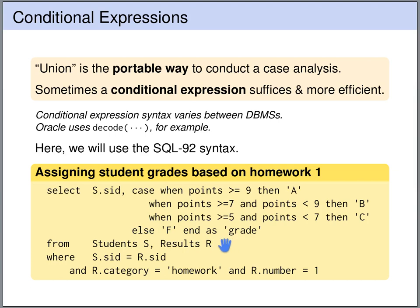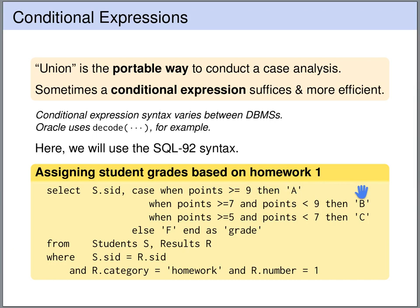Here we are querying the students table and the results table, looking only at results that belong to the student and at homework 1 results. For the output we select the student ID and make a case distinction based on the points: if points are greater than or equal to 9, we assign grade A; if points are greater than or equal to 7 but less than 9, we assign grade B; if points are greater than or equal to 5 and less than 7, we assign grade C; and if none of these clauses match, we assign grade F.